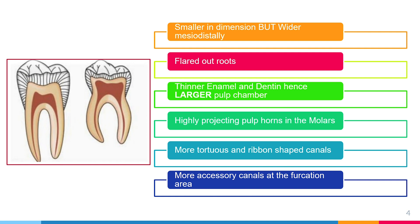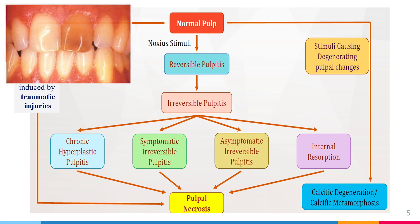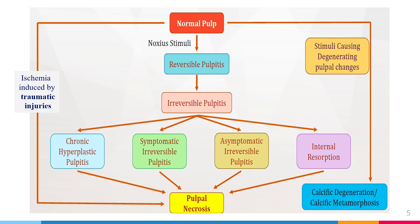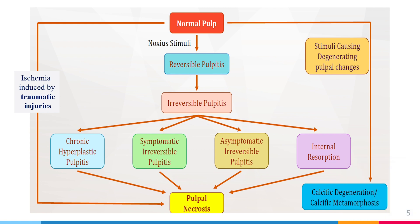Several factors can lead to pulpal necrosis and various pulpal pathologies. One scenario is trauma — a fall or direct blow to the teeth — which can cause ischemia, making the tooth appear black or discolored. Another factor is long-standing irritants such as caries, deep fillings, and chronic inflammation, which can lead to calcification of the pulp. As seen in the image, the central incisor shows no canal — the pulp is completely obliterated.